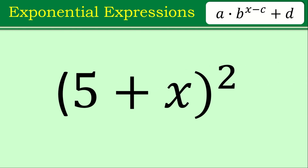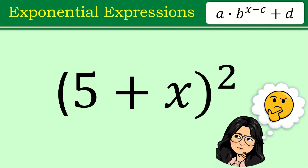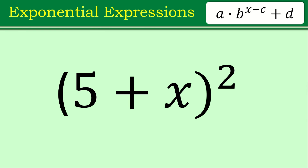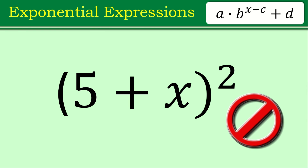How about this item: the quantity of 5 plus X squared? This one is not an exponential expression, because in your exponent of the base B, where you have X minus C, you don't have a variable X here or any variable in this case. It doesn't qualify to be an exponential expression.